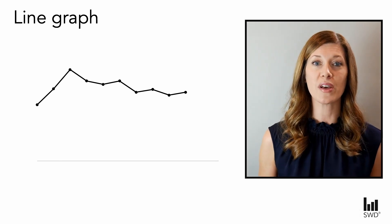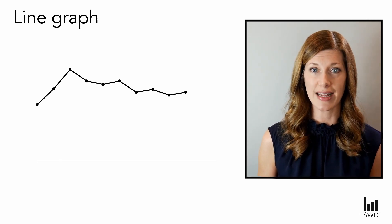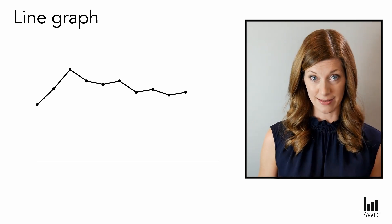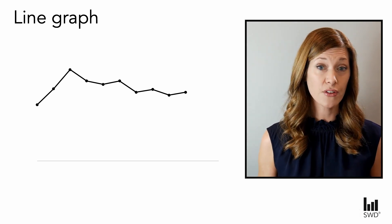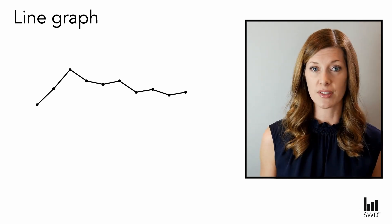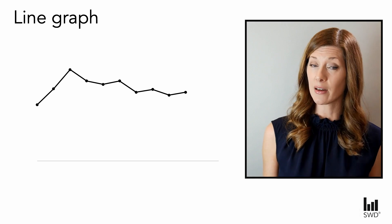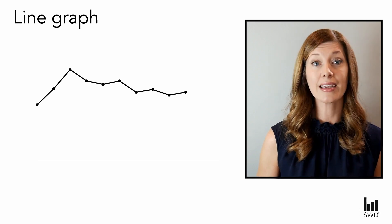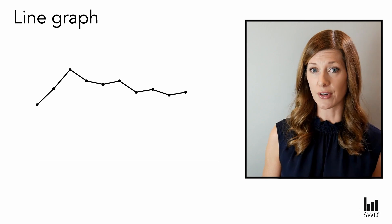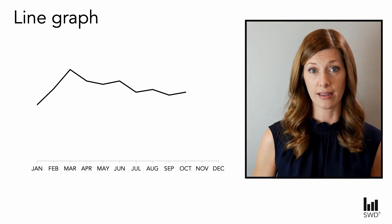The rule with line graphs is that the lines connecting the points have to make sense. This happens most often for continuous data, though there are some exceptions we'll look at in a moment. The continuous data we deal with most typically is time — days, months, quarters, years. For example, let's imagine we're looking at monthly data.